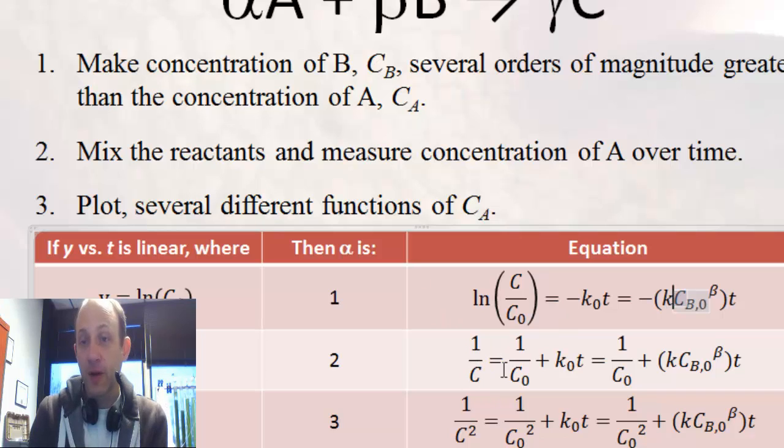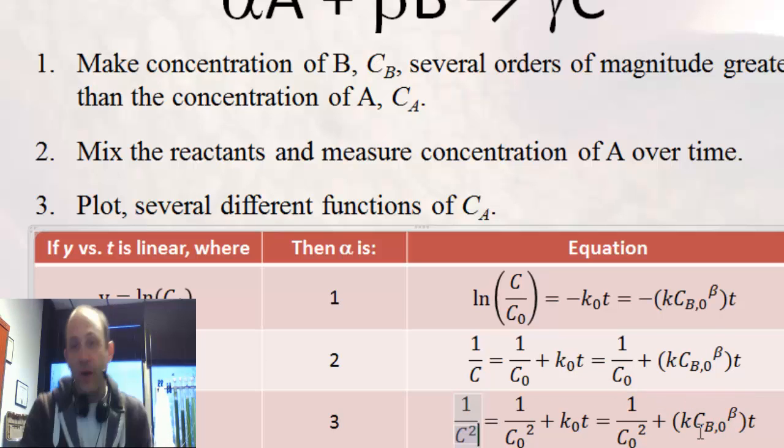So, if I plot 1 over the concentration versus time, I get a line where this is the slope. If I have a third order reaction, I plot 1 over the concentration squared, and I will get a linear equation where this is the slope.